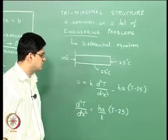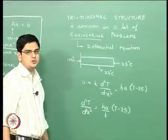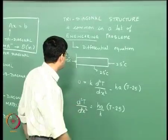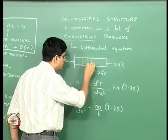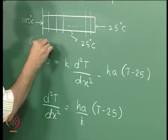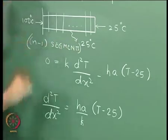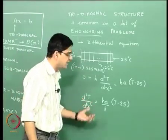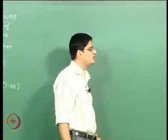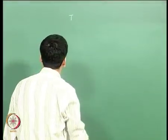This is a straightforward engineering problem which results in what is known as an ordinary differential equation boundary value problem. Under steady state, we discretize the rod into multiple segments — n minus 1 segments. When we do that, we get n equations in n unknowns. I am not going to derive them right now, but I will state them; the derivation will be done in module 8, lecture 2 onwards.